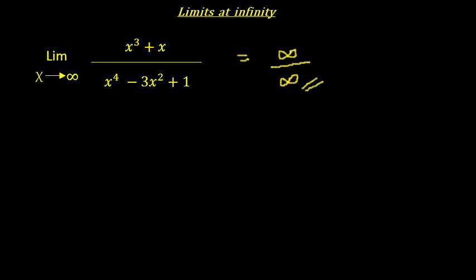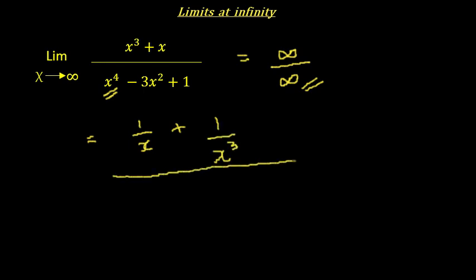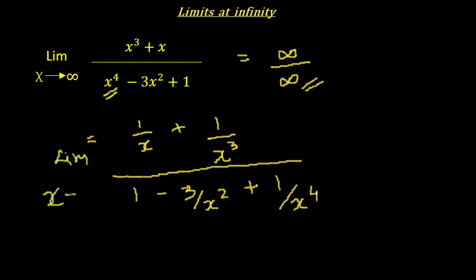In such cases, what we need to do is inspect the rational expression and find the highest exponent of x. The highest power of x here is x to the power 4 — this is the term which has the highest power in the whole expression. Then we divide both numerator and denominator by this value to get (1/x + 1/x³) divided by (1 − 3/x² + 1/x⁴), and take the limit as x tends to infinity.